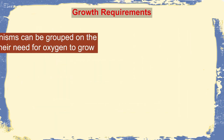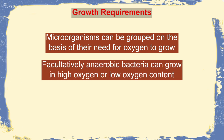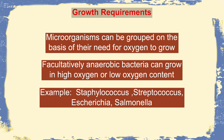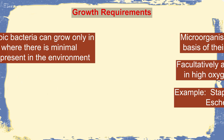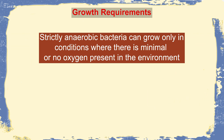Bacteria can also be classified on the basis of their growth requirements. Facultatively anaerobic bacteria are happy in the presence of oxygen but can also grow in its absence — tough organisms like Staphylococcus aureus, Streptococcus, Enterobacteriaceae, and Salmonella. Strictly anaerobic bacteria, such as Bacteroides, can only grow in minimal amounts of oxygen; oxygen is essentially a poison for them.